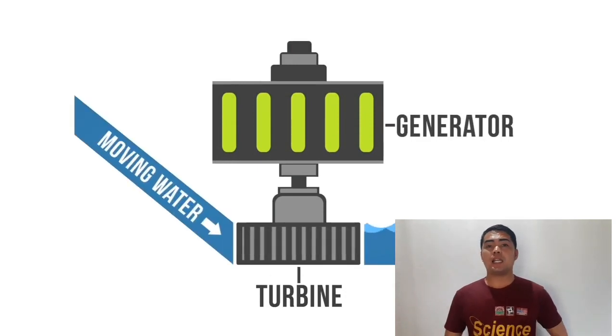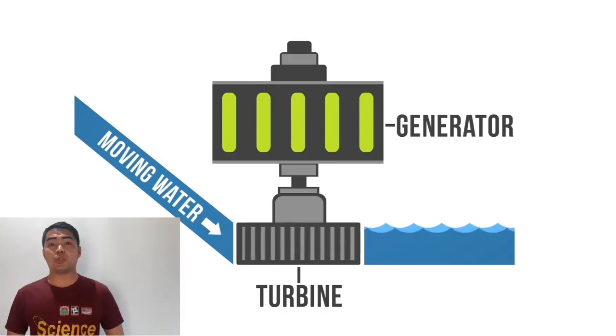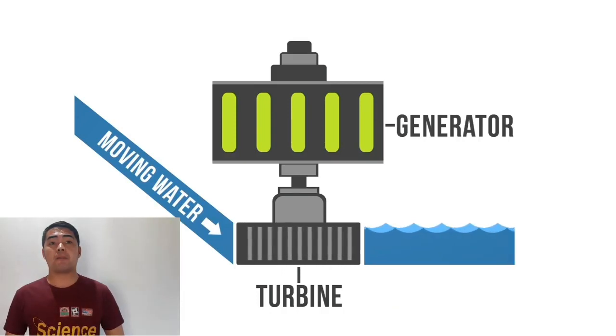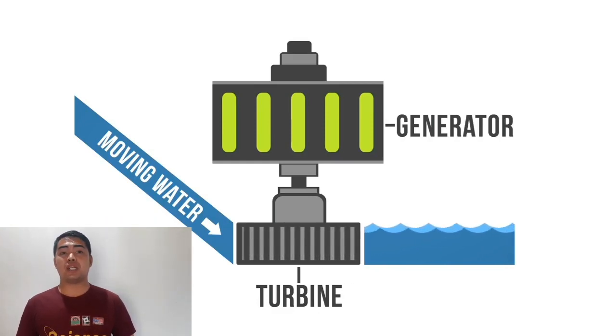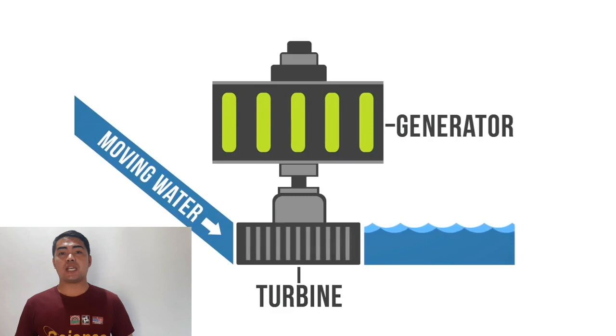The mechanical energy created by moving water spins rotors on a turbine. This turbine is connected to an electromagnetic generator which produces electricity when the turbine spins.